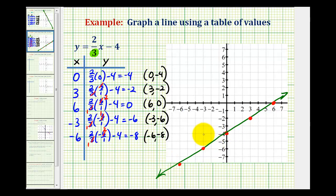And I do want to emphasize that the reason we didn't have any fractions here for our coordinates was because we selected x values that were multiples of the denominator, in this case multiples of 3. So, for example, if we were trying to sketch the line y equals, let's just say, 2/5x minus 4, we would want to select x values that were multiples of 5 to avoid fractional values for y.